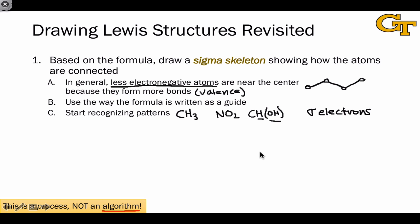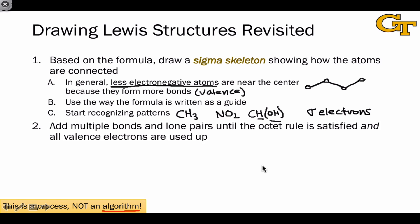Once we have what we think is a reasonable sigma skeleton down, we move to adding multiple bonds and lone pairs to the structure until we've satisfied the octet rule and all the valence electrons are used up. So here, for example, we might add a lone pair to this atom, a multiple bond here, maybe a triple bond here, something like this, until we've satisfied the octet rule on every atom, and all the valence electrons are used up.